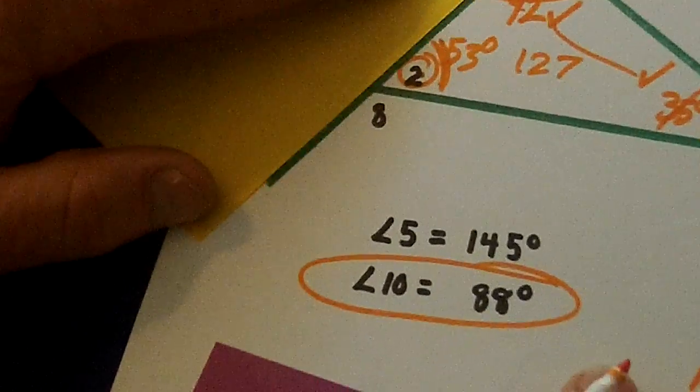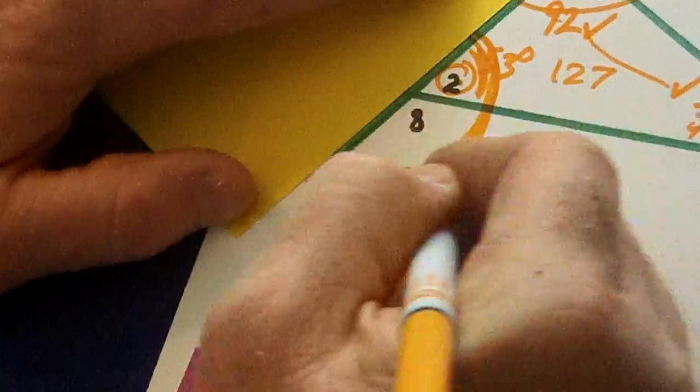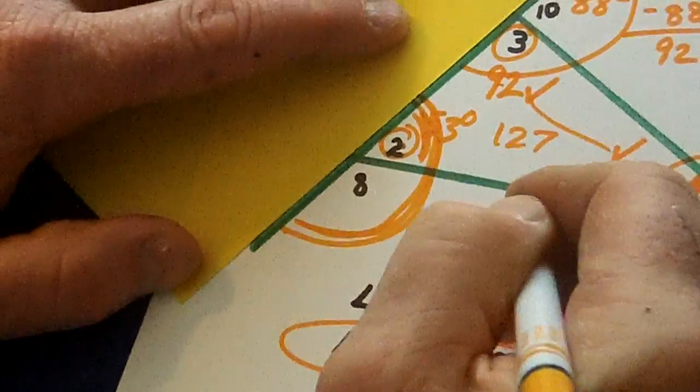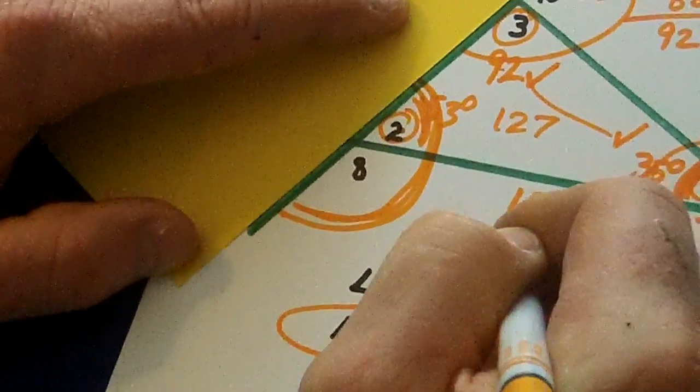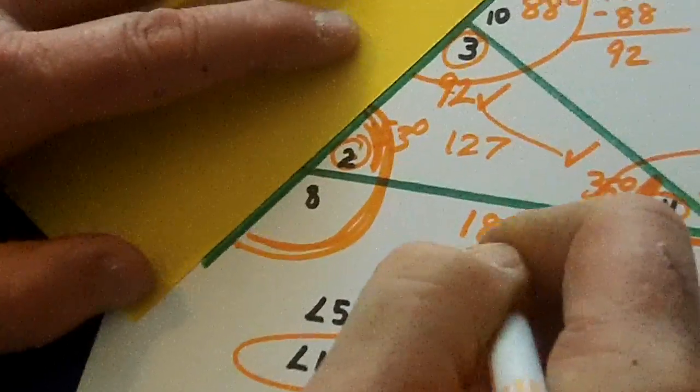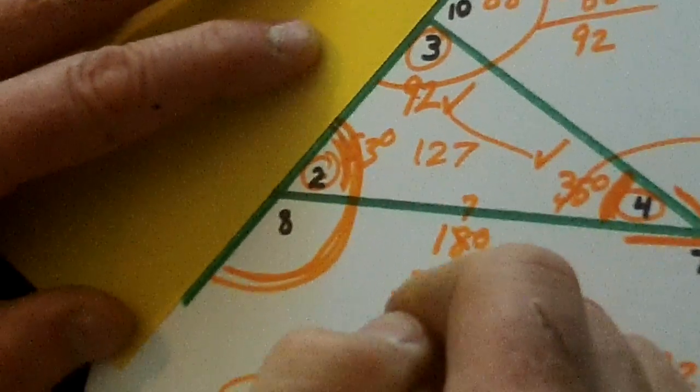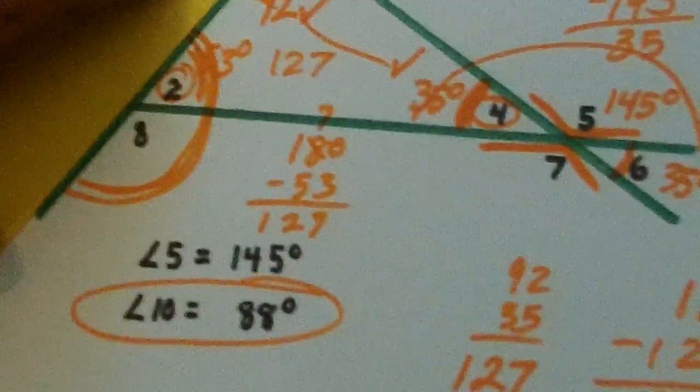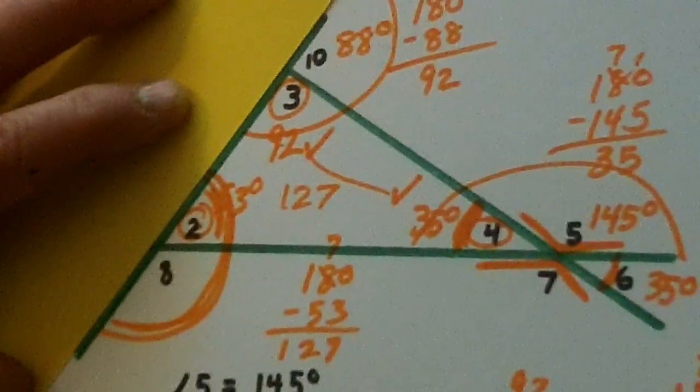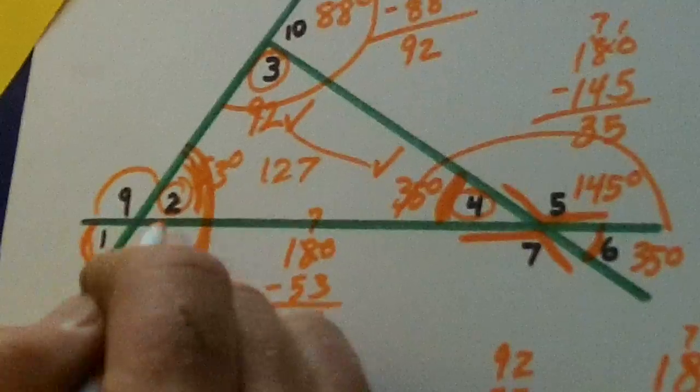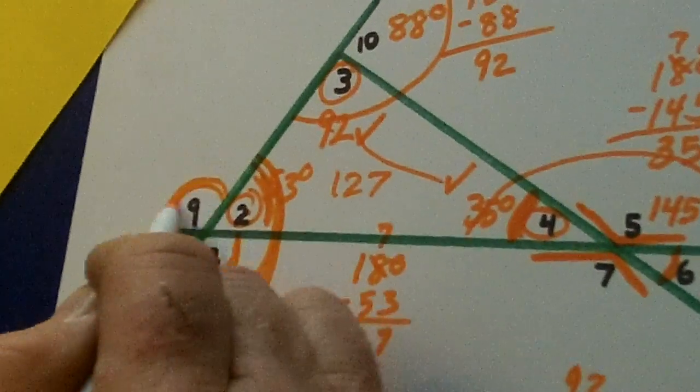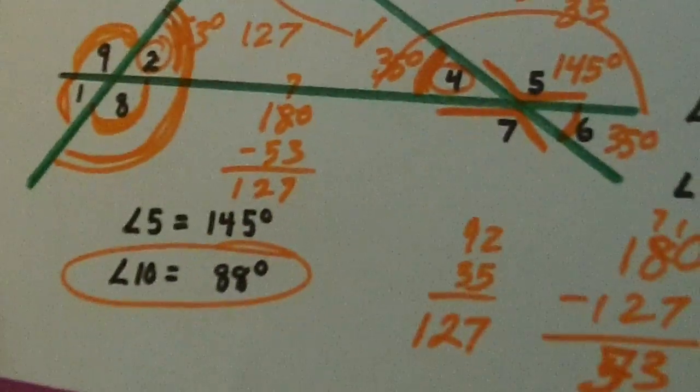Watch this. Two and eight are what? Supplementary. So eight is 180 minus 53. And so let's do this. And we get 127 degrees, number eight. Then look. Nine and eight are both vertical. So this is 127 also.